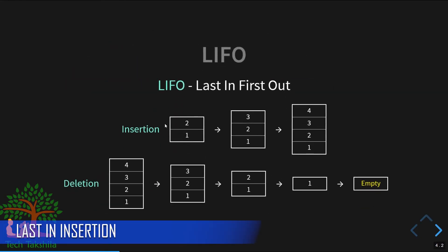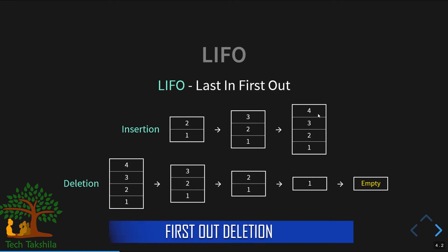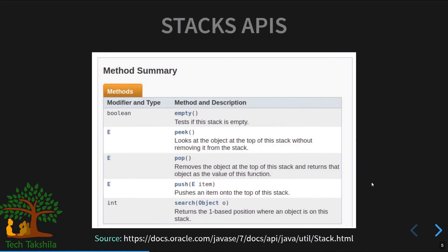What we mean by last in, first out is that when we insert new elements — say 3 goes to the top, then 4 goes to the top — when popping, 4 will go out first, then 3, then 2, and finally we get the empty stack. The last element inserted is the first one removed.